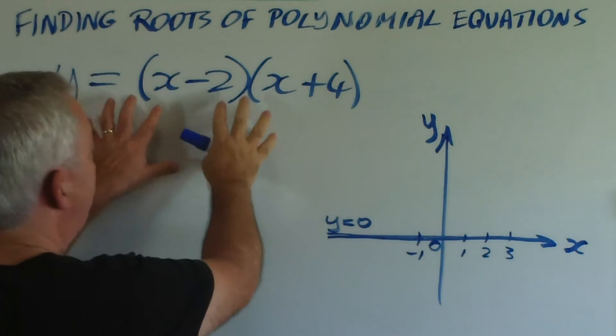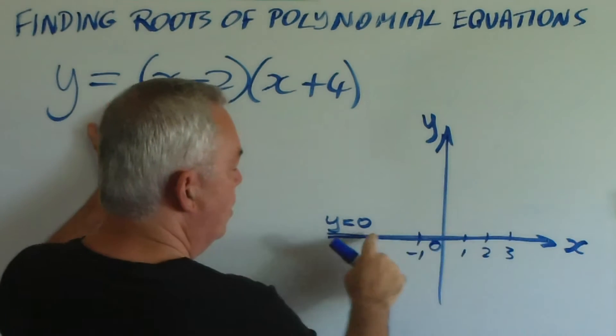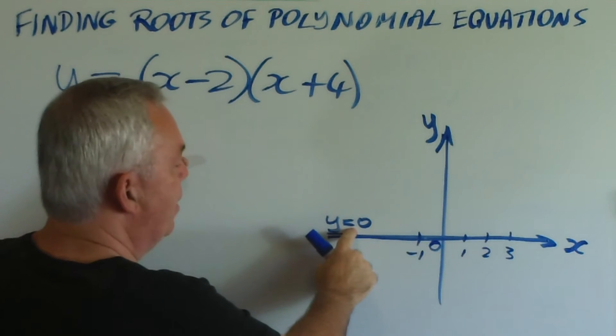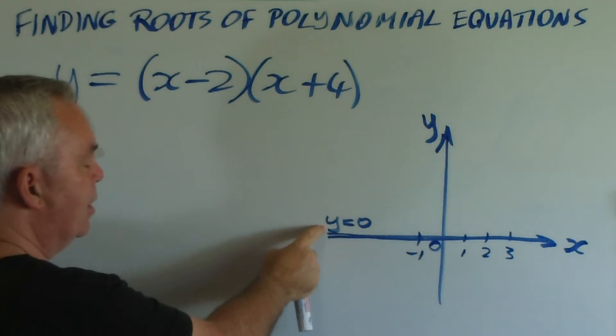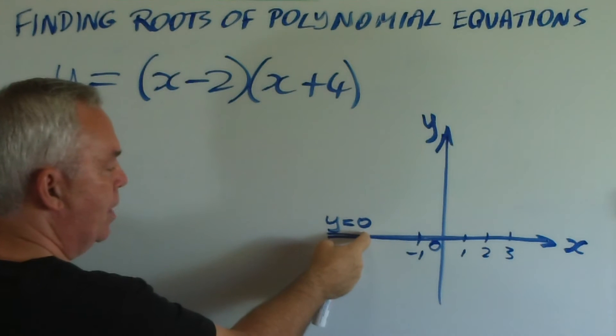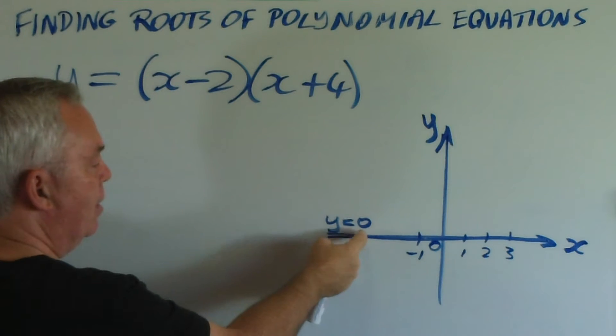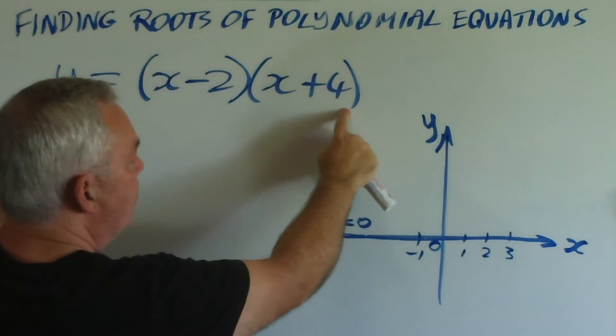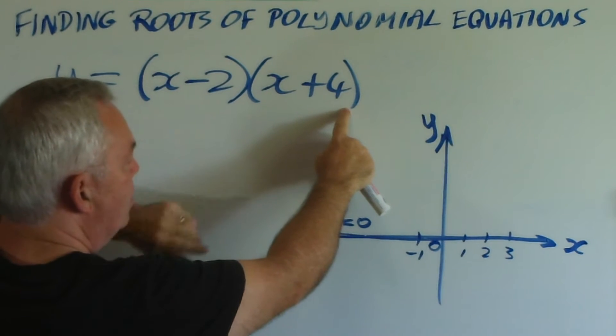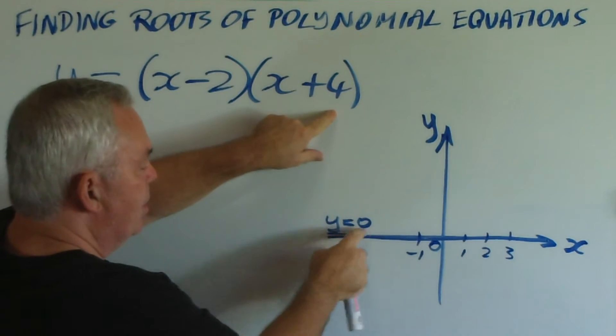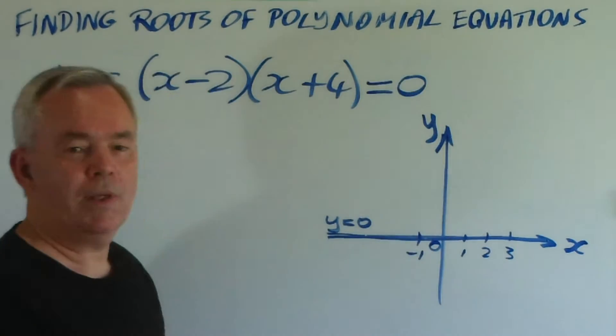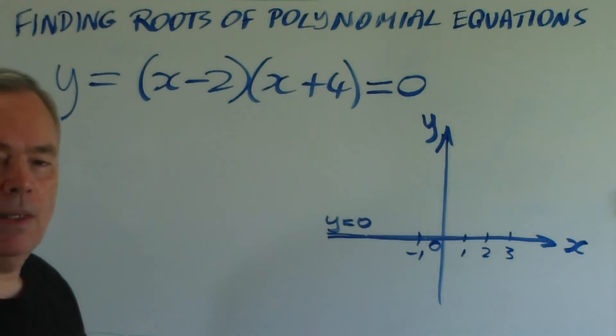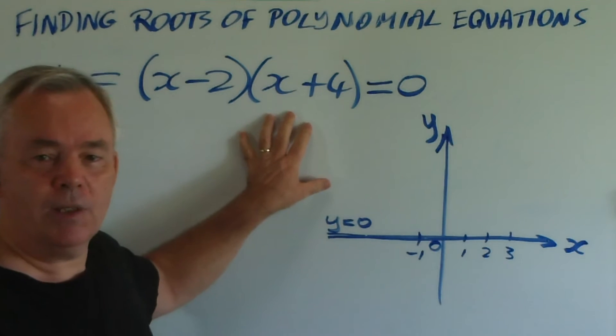Consequently, to find where this equation meets the line with this equation, we have to solve these two equations simultaneously. And their y values must be identical at the points where they cross. So we know that if y equals this for this equation, it must also equal zero because of the other equation. And therein lies the secret to finding the roots.